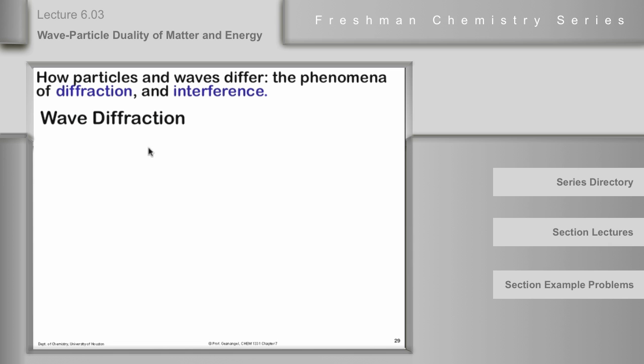So now we need to begin thinking about what are the characteristics of wave phenomena that are different from particles. Because what he was proposing was kind of a wave-particle duality. Under some conditions, the electrons might behave like a particle, have a mass and charge and so forth. Under other conditions, maybe they would behave in a more wave-like approach. So I want to talk very briefly about wave diffraction.